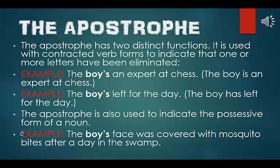The apostrophe has two distinct functions. It is used with contracted verb forms to indicate that one or more letters have been eliminated. Example: 'the boy is an expert at chess' becomes 'the boy's an expert at chess.' Example: 'the boy has left for the day' becomes 'the boy's left for the day.' The apostrophe is also used to indicate the possessive form of a noun. Example: the boy's face was covered with mosquito bites after a day in the swamp.